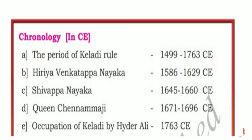First, chronology in CE, which means common era. The period of Keladi rule: 1499 to 1763 CE. Second, Hiriya Venkatappanayaka: 1586 to 1629 CE. Third, Shivappanayaka: 1645 to 1660 CE. Fourth, Queen Channamaji: 1671 to 1696 CE. And last, occupation of Keladi by Haidar Ali: 1763 CE.